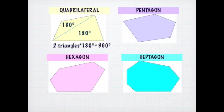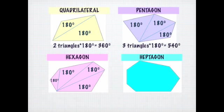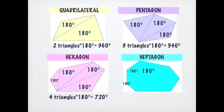We can do the same thing for the pentagon — here I can draw three triangles. Each of those are 180, so three triangles times 180 is 540 degrees. Same thing for the hexagon: four triangles that are each 180 degrees gives me 720 degrees. And for the heptagon, we have five triangles that are each 180 degrees, which gives us 900 degrees.